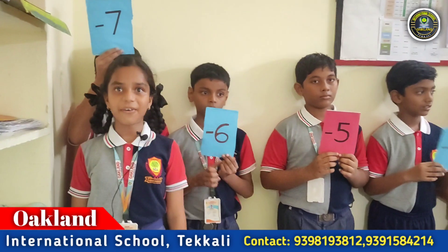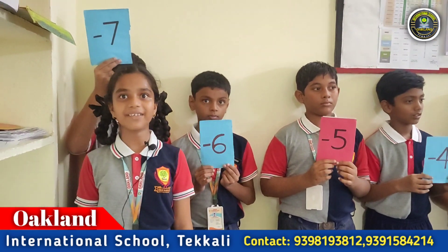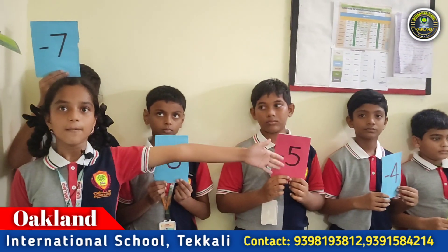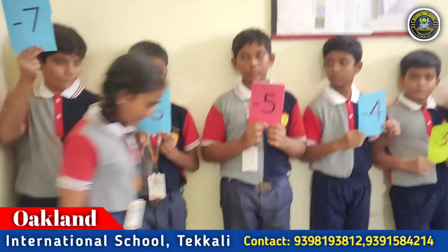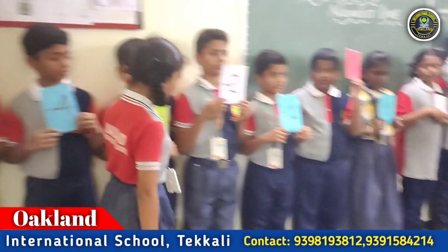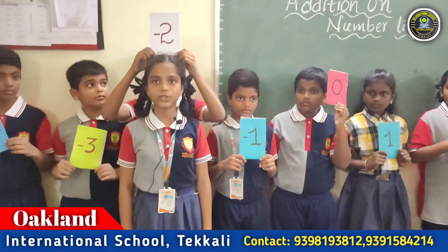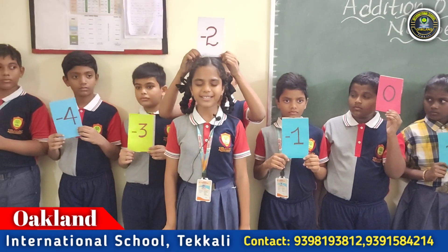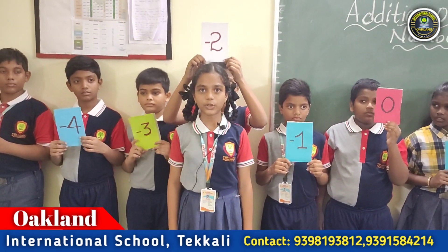We have to add plus five. Plus five is a positive integer. We have to move right side on the number line. One, two, three, four, five. Now I reach minus two. So minus seven plus five is equal to minus two.